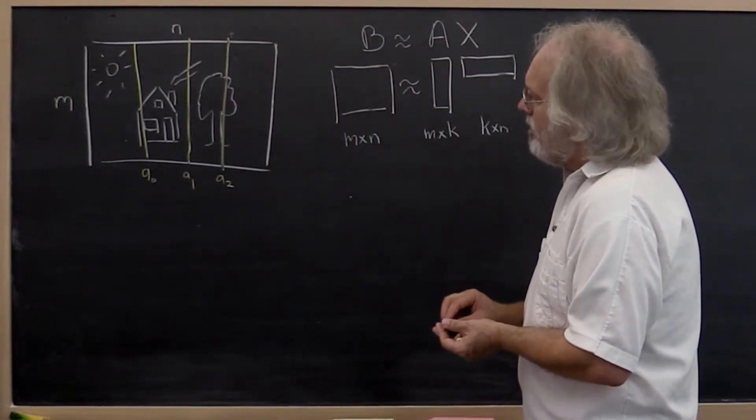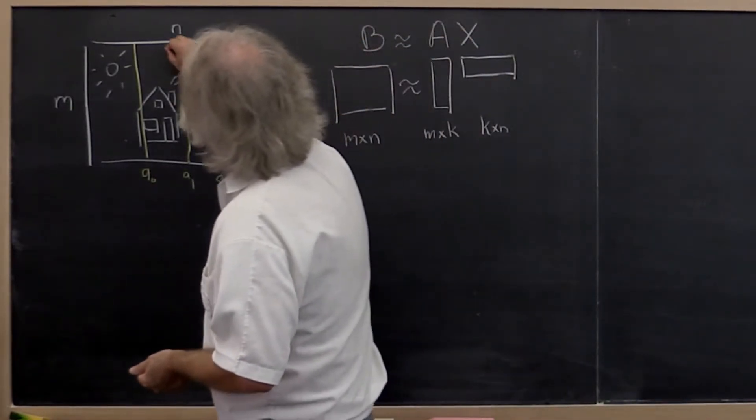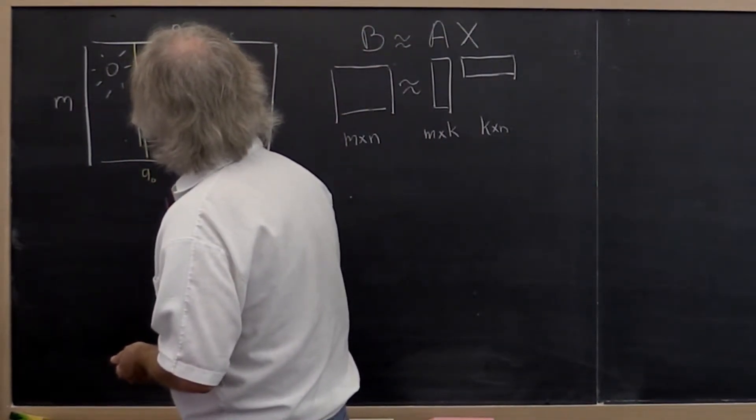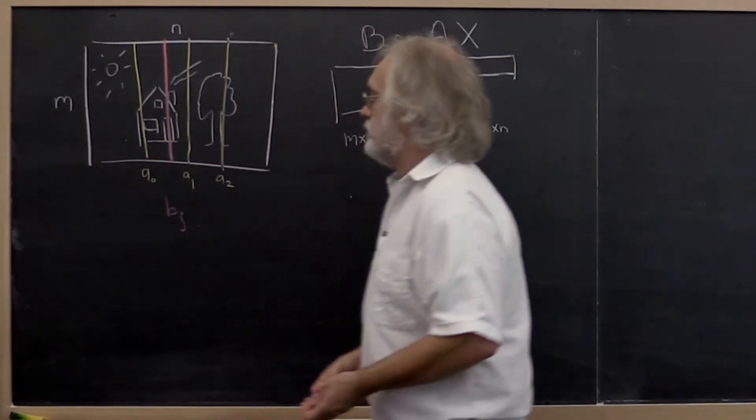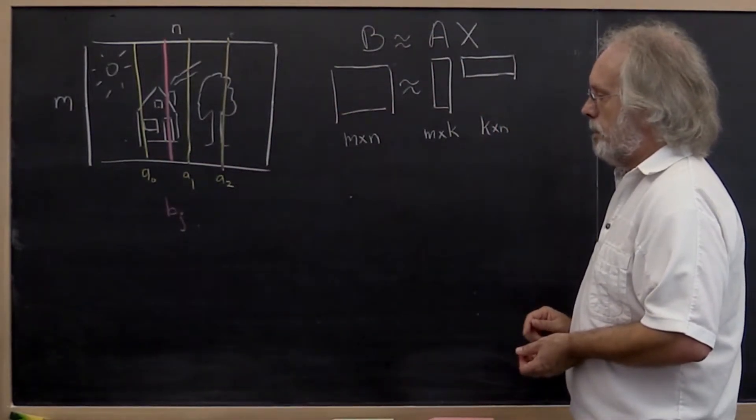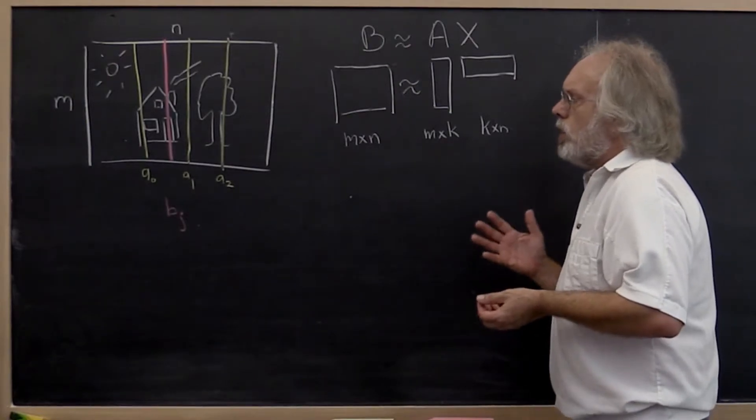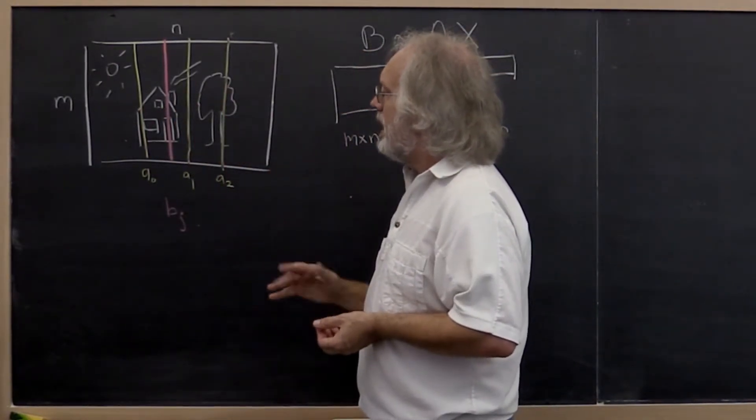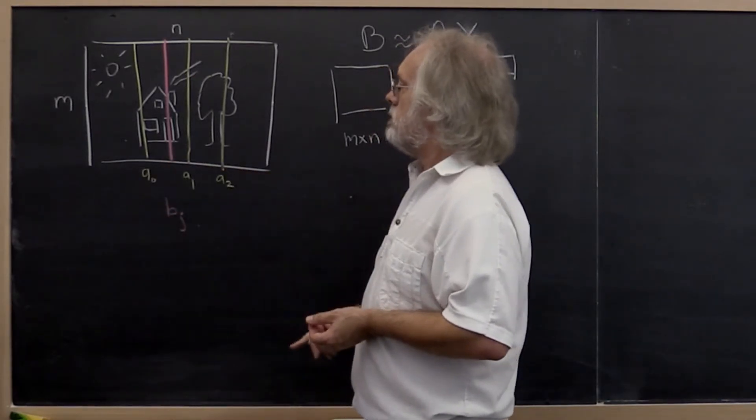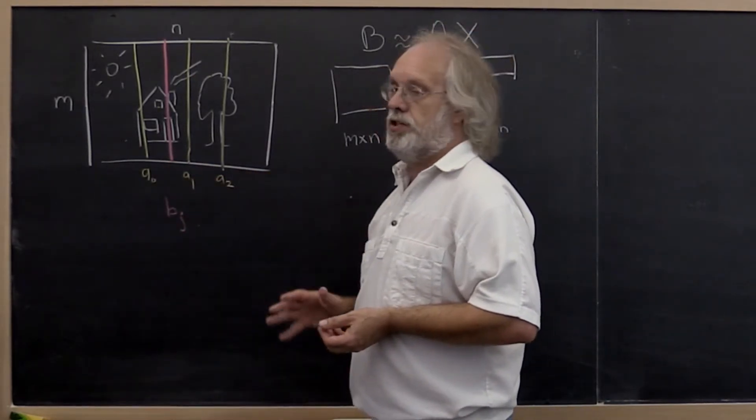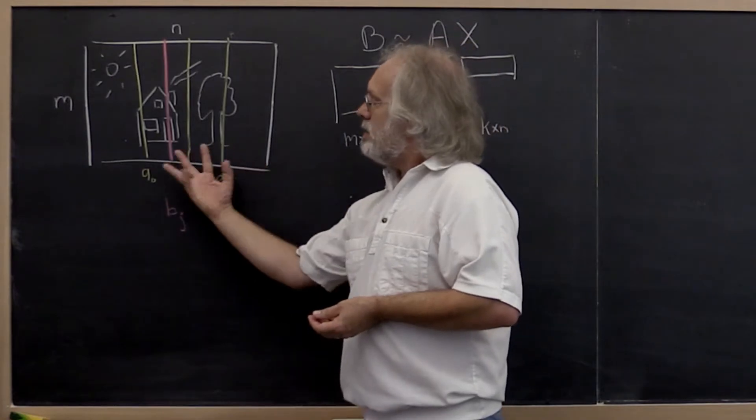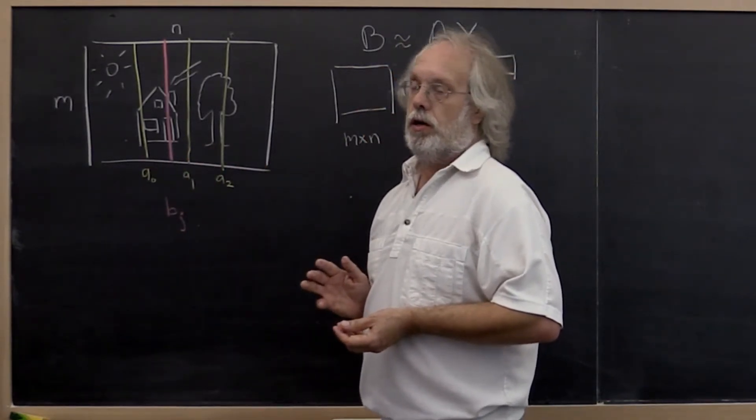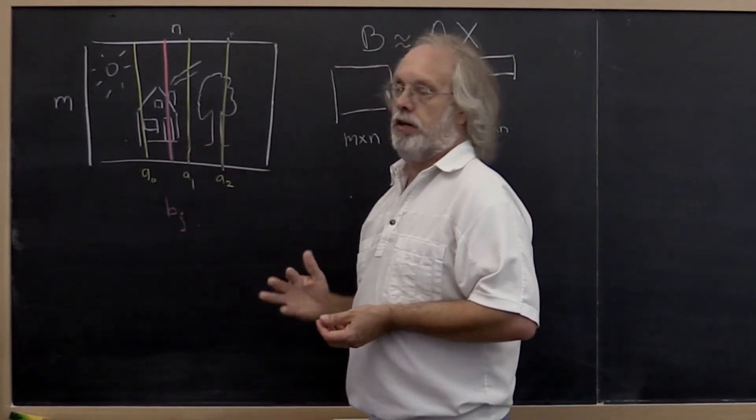And then if we take an arbitrary column in our original picture, let's call it Bj, we're going to say, if the columns that we picked represent the picture, then maybe we can approximate this column Bj as a linear combination of the columns that we picked for A.